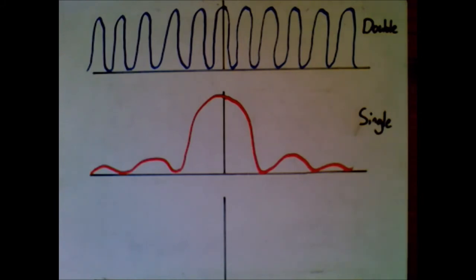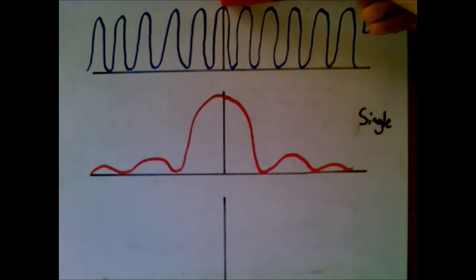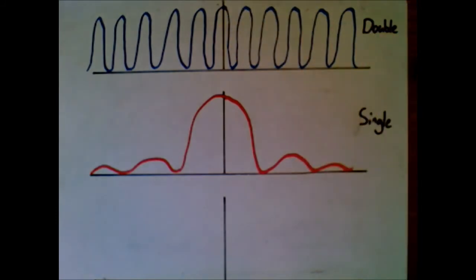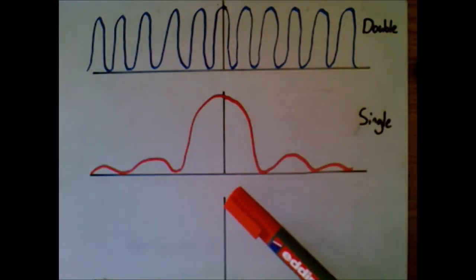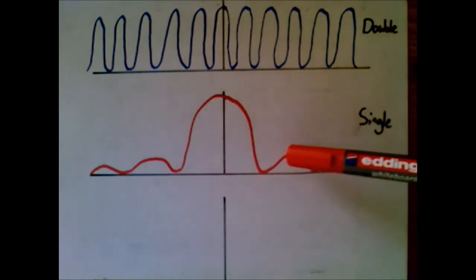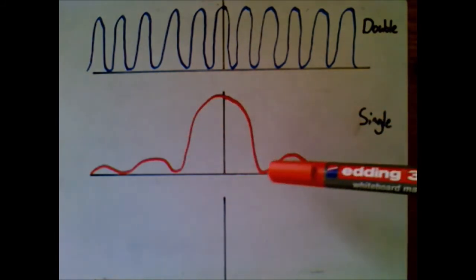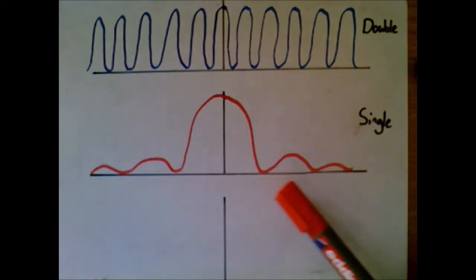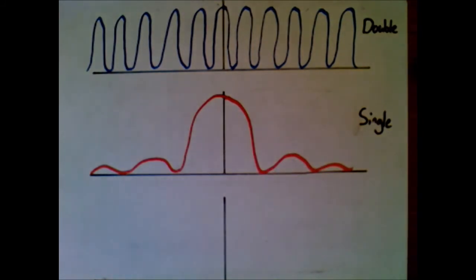By way of a summary, looking at intensity-against-position graphs for the double slit and single slit: for the double slit we get equally spaced fringes all the same brightness — that's exactly what you would draw if asked. For the single slit you've got your bright wide central maximum and then much lower intensity, narrower secondary maxima further out. That's what you need to know for your A-level course.